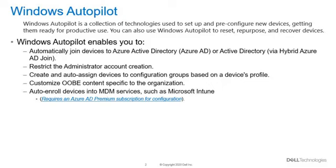Windows Autopilot enables you to join devices to Azure Active Directory or Active Directory via hybrid Azure AD join. You can also restrict the administration account creation, create and auto-assign devices to configuration groups based on device profile for auto-deployment — kiosks come to mind — and enable the out-of-box experience content to be customized for the organization. Auto-enrolling devices into MDM is the last component of Windows Autopilot.